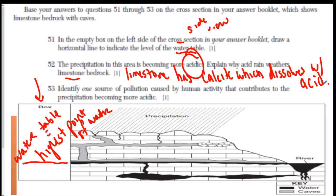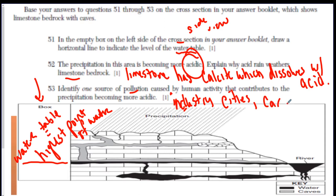Number 53: identify one source of pollution caused by humans that would contribute to precipitation becoming more acidic. Think about what humans do that causes pollution. The first thing that comes to mind is industry — like cities. You could say car exhaust. There are a lot of answers. Anything that causes pollution — landfills, which is like a big garbage dump. So stuff like that.